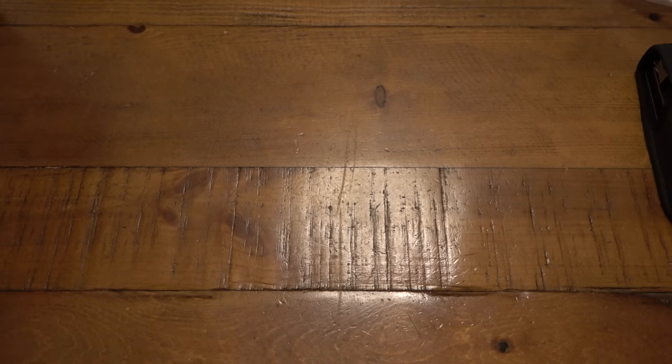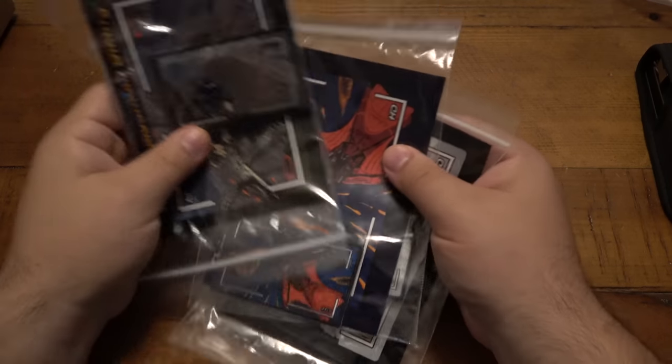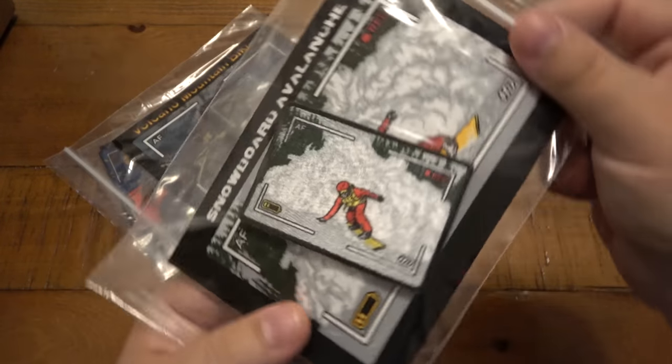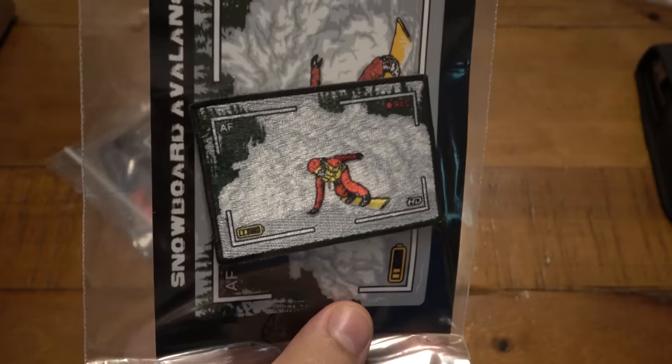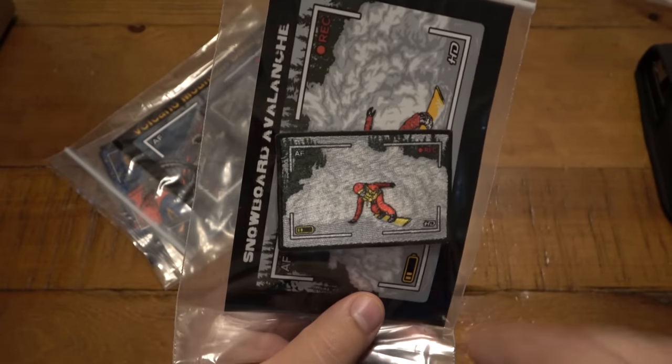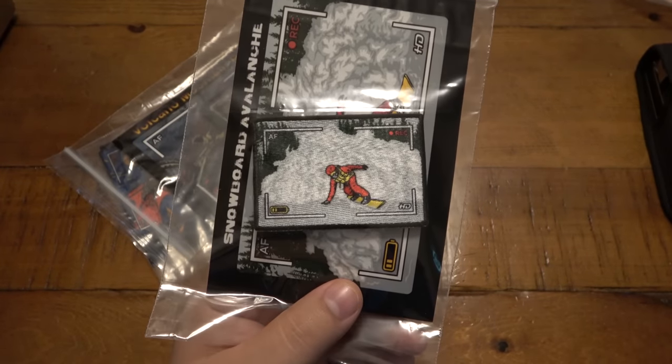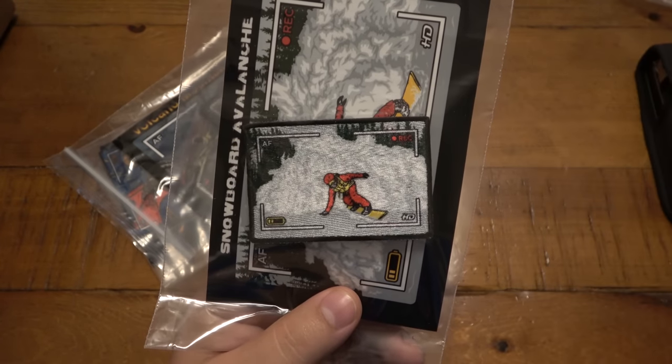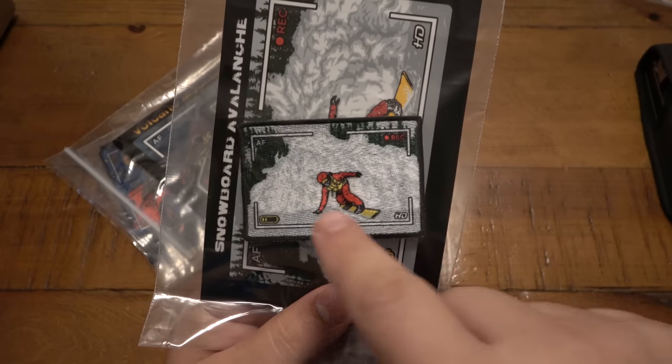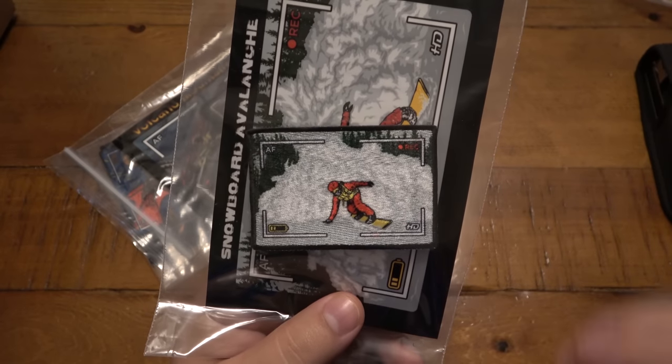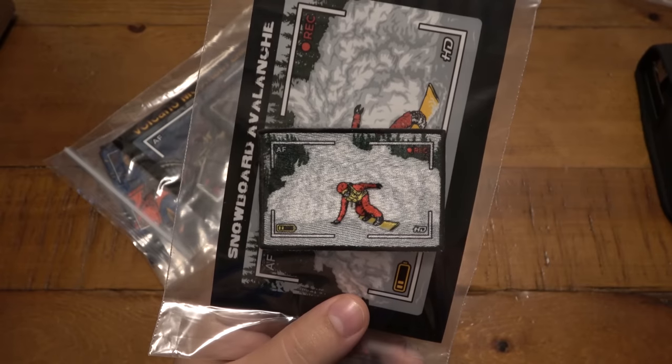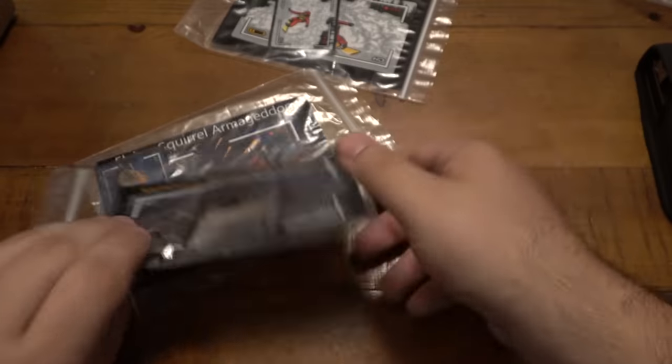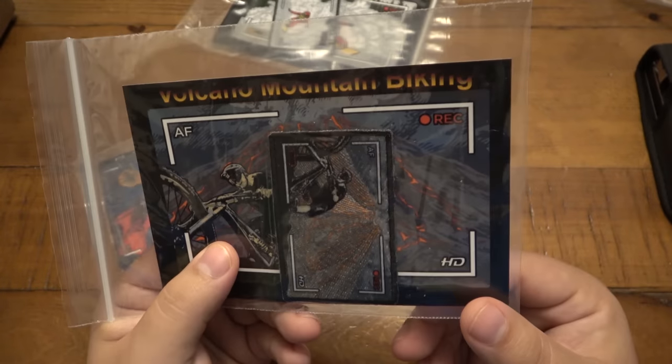And then he has some patches, and I believe these are custom patches that he makes. So the first one here is Snowboard Avalanche. And this is really cool because these patches, I mean obviously it's just kind of shiny thread, but they really have kind of a 3D look, I don't know if that's on purpose or not. This is pretty cool for the extreme sportsmen out there. If you do snowboarding and stuff, obviously you can see this is like through the lens of like a GoPro or something. We got the record button, little battery power, just super cool. I really like that a lot.